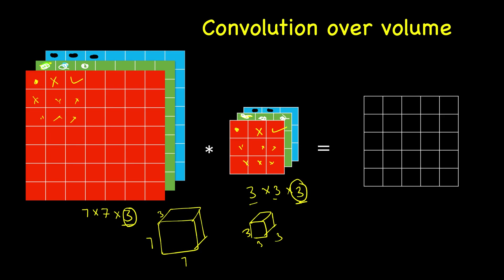And these black ones overlap with these, and not just these three, all the nine. So nine here, nine here, nine here. So this entire volume of 3×3×3, and you do element-wise multiplications. This is multiplied to this, this multiplied to this, and you add all those 27 values.